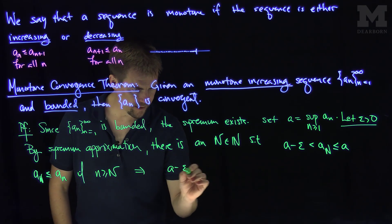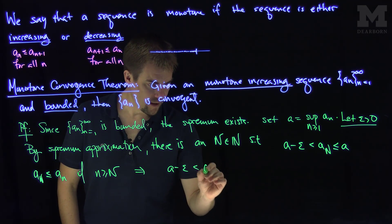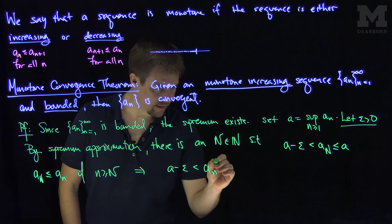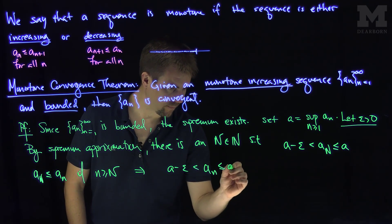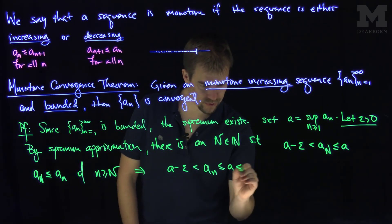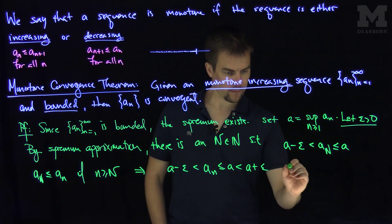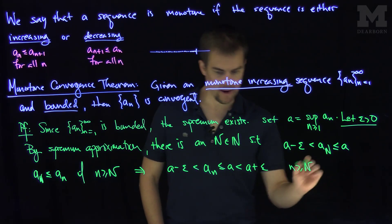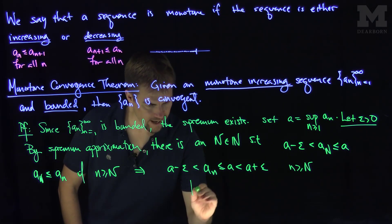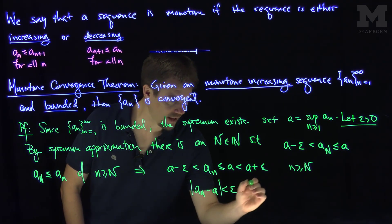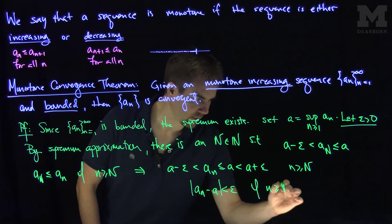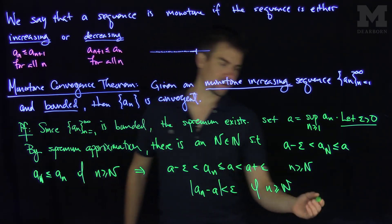Therefore, a minus epsilon is less than a_n, which is less than or equal to a, which is strictly less than a plus epsilon. This condition is valid if n is bigger than or equal to N. We can rewrite this as |a_n - a| < ε if n ≥ N, and that proves our result.